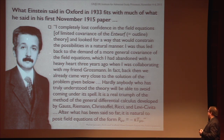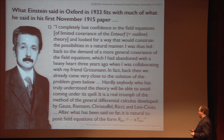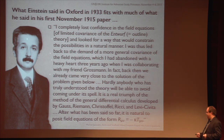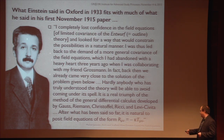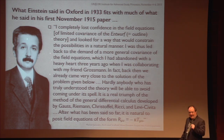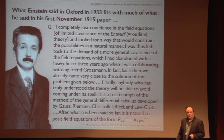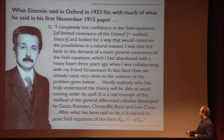And he concludes saying: 'Hardly anybody who has truly understood the theory will be able to avoid coming under its spell. It's a real triumph of the method of the general differential calculus developed by Gauss, Riemann, Christoffel, Ricci, and Levi-Civita.' And then he says, 'after what has been said so far, it is natural to posit field equations of the form R mu nu equals kappa T mu nu' — where again, remember that R mu nu is just half the Ricci tensor. All right, let's go further back and look at what he was doing three years earlier with Grossmann.